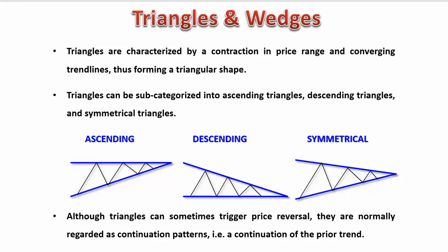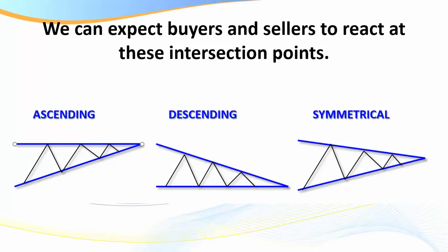Ascending and descending triangles — really triangles and wedges combined — have a very narrow price action getting tighter and tighter. It's a narrowing of the trading range, and they're really continuation patterns. They don't always work out as expected: the ascending triangle is expected to break to the long side, descending to the short, but it's probably only 60% right. So if you're prepared for a breakout and know the energy is building, you can be ready for either direction.